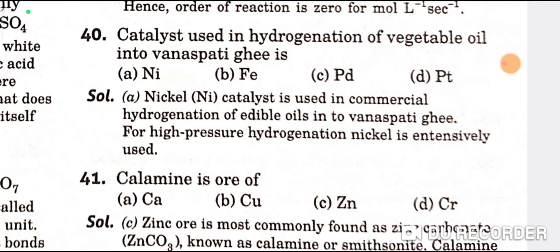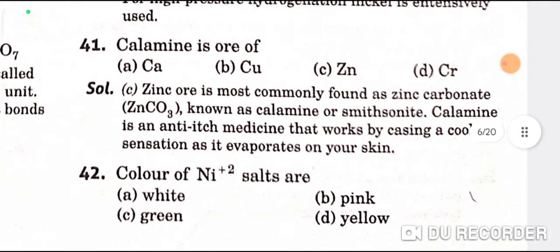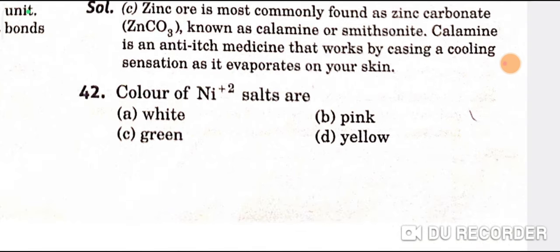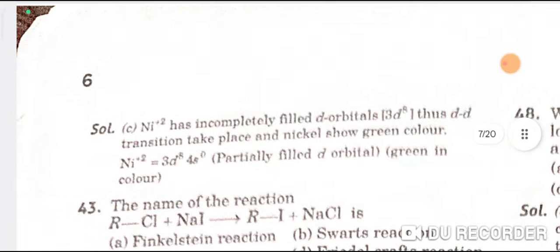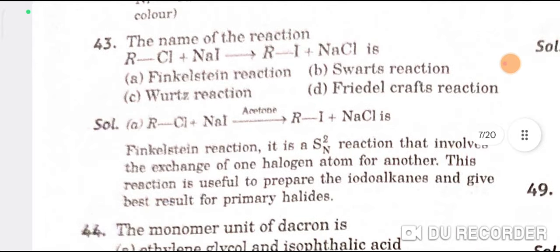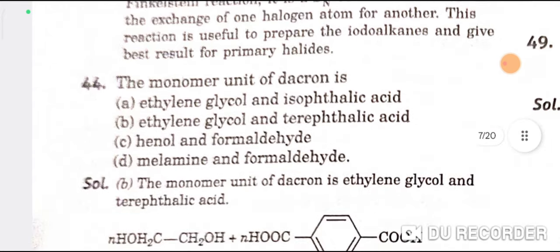The catalyst used in hydrogenation of vegetable oil into vanaspati ghee is nickel — A is the correct option. Calamine is an ore of zinc — C is the correct option. The color of nickel salts is green — C is the correct option. The name of the reaction is the Finkelstein reaction. The monomer unit of Dacron is ethylene glycol and terephthalic acid — B is the correct option.